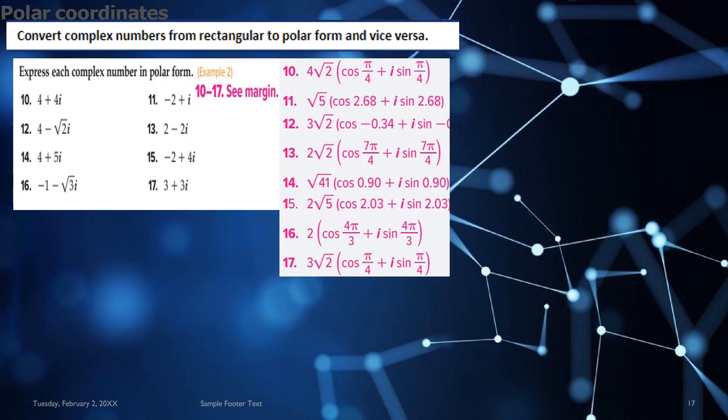Moving on, we have convert complex numbers from rectangular to polar form and vice versa. So for question 10 to question 17, these are the solutions given in pink. You can match the correct answer and check your answer accordingly.